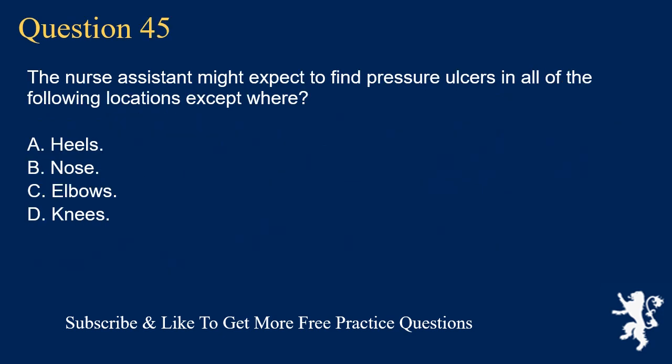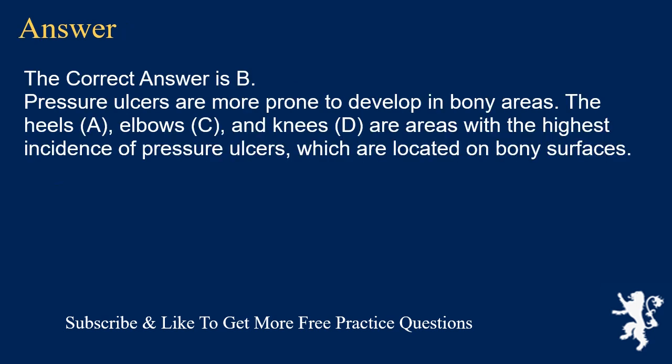Question 45. The nursing assistant might expect to find pressure ulcers in all of the following locations except: A. Heels. B. Nose. C. Elbows. D. Knees. The correct answer is B. Pressure ulcers are more prone to develop in bony areas. The heels, elbows, and knees are areas with the highest incidence of pressure ulcers, which are located on bony surfaces.